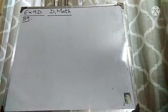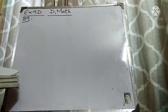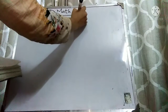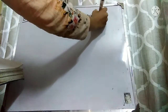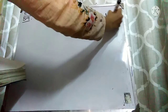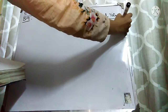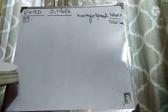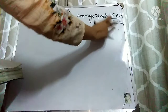The very first thing is you have to write down the formula to find out the average speed. The formula to find out the average speed is total distance travelled divided by total time taken. D stands for total distance. So you have to find out total distance and total time.